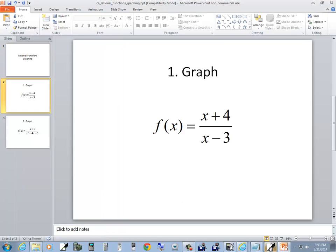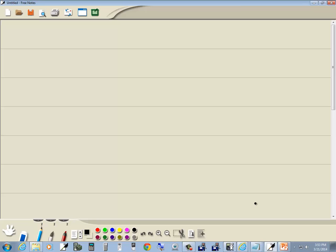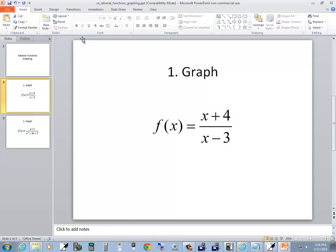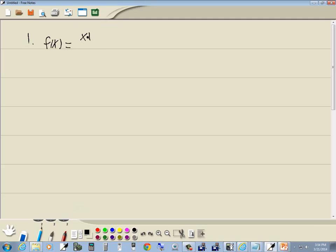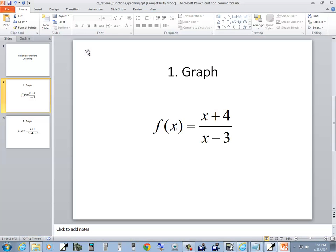Let's look at our first problem. We've got f(x) is equal to x plus 4 over x minus 3.